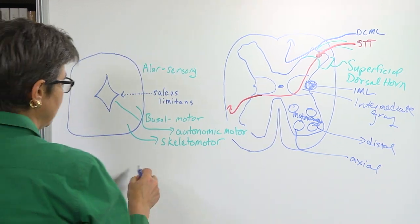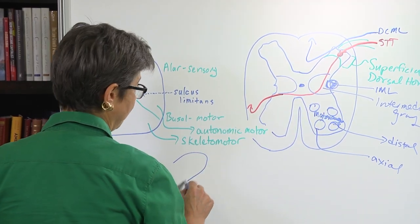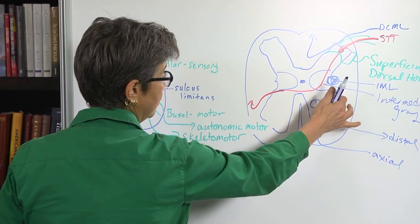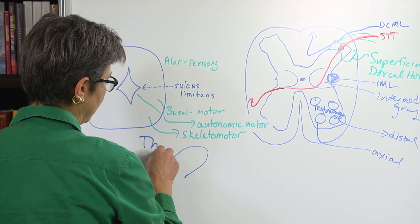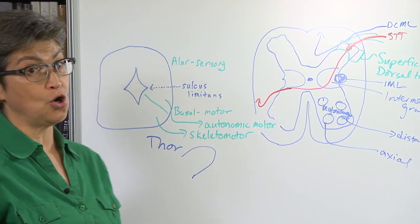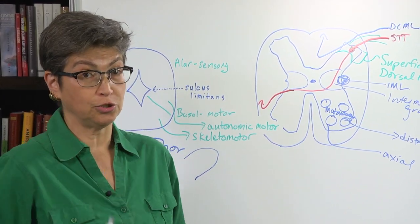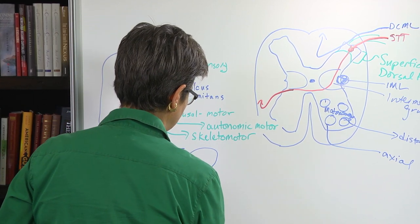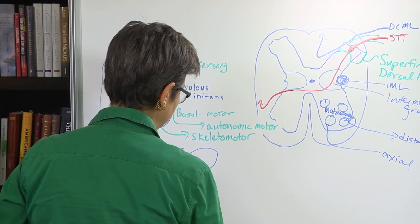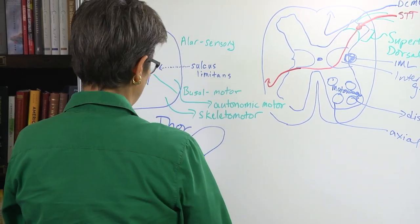What does that mean? It means that if you're in the thoracic cord, let's just think about what this horn, this ventral horn, is going to look like in the thoracic cord. There is no appendicular musculature, there's no distal musculature, it's all axial. So what do we get? We get this skinny little ventral horn.